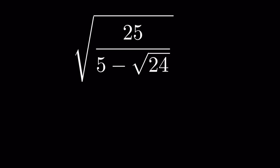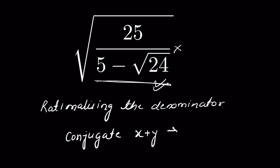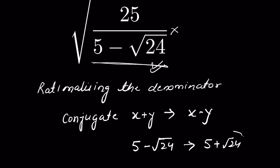To simplify it, let's first rationalize the denominator. To do that, we need to multiply and divide by the conjugate of the denominator. The conjugate of x plus y is x minus y and vice versa. So the conjugate of (5 minus square root of 24) will be (5 plus square root of 24). If we multiply and divide by the same number — this conjugate — the fraction won't change.